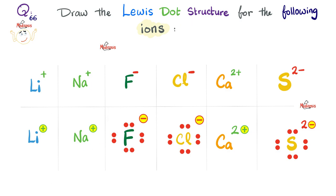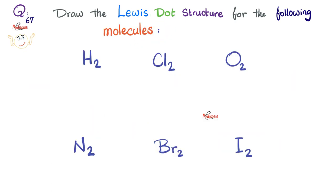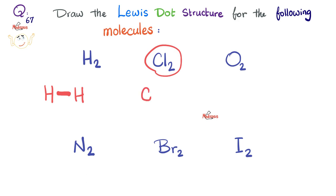Your answers in color — pause and review. We've done Lewis dot structures for neutral atoms and ions. Now can we do it for molecules? Here's hydrogen and hydrogen to make H₂. Each hydrogen alone has one valence electron. We connect them with one covalent bond: H–H. Done.